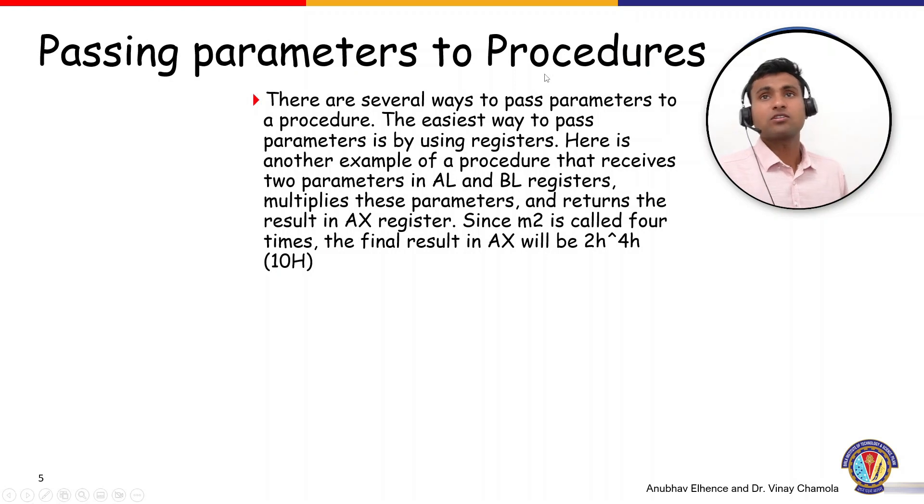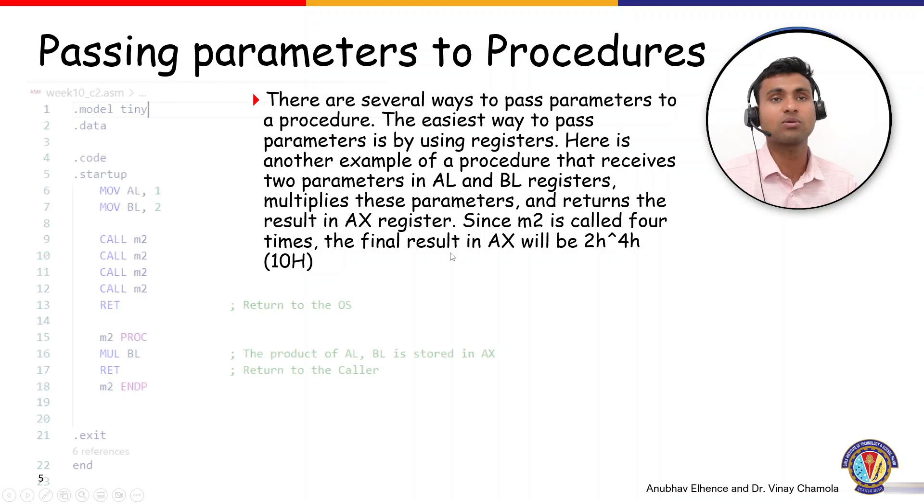Passing parameters to procedures. Now this is where it will become interesting because there are multiple ways to do that. There are several ways to pass parameters to a procedure. The easiest way to pass parameters is by using registers. Here is another example of a procedure that receives two parameters in AL and BL registers, multiplies these parameters, and returns the result in AX register. Since m2 is called four times, let's look at the code.